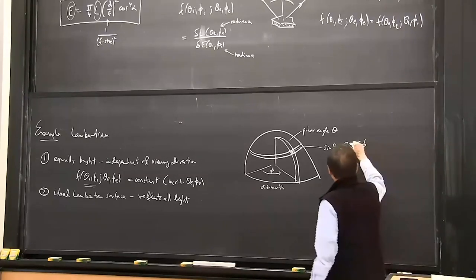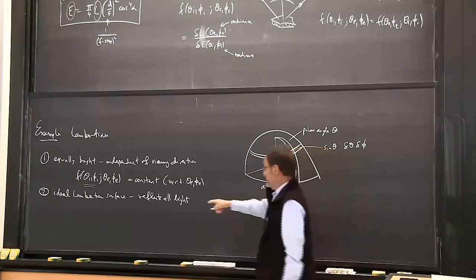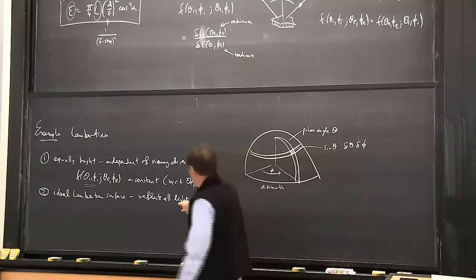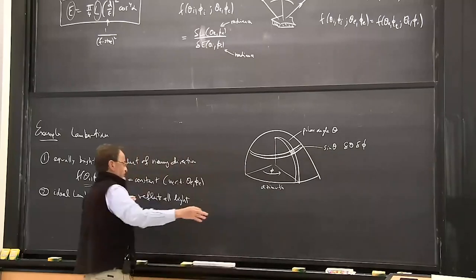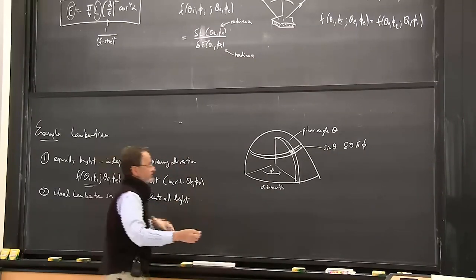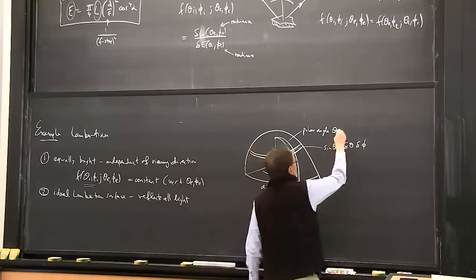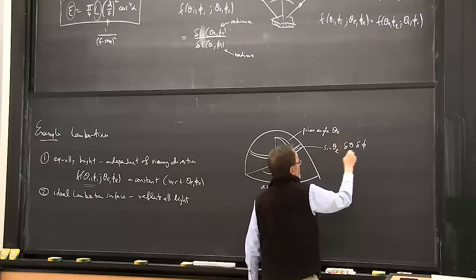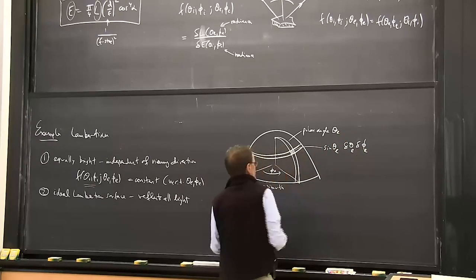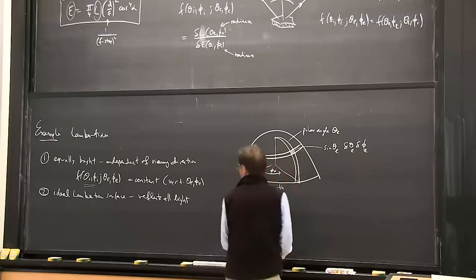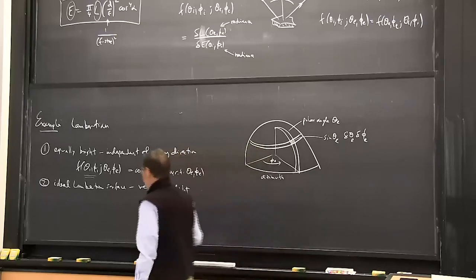So we're integrating over all emitted directions. The azimuth range is 2π, so we integrate from minus π to plus π. For the polar angle, we're not interested in points below the horizon because the object itself is blocking—it's only emitting above the surface, so we only deal with 0 to π/2 for the polar angle.